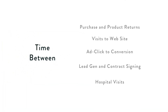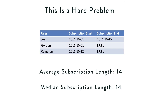You might think about the time between when you purchase a mattress and whether they return it within 100 days if you have a 100-day return policy. You might think about the time between initial lead gen and eventual contract signing if you're a SaaS business. You might think about the time between hospital or doctor's visits if you're a company trying to maximize the health of your customers. Turns out this is actually a hard problem — a lot of the tools we would normally apply, like counts and averages, don't really work very well.